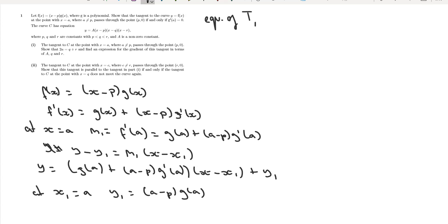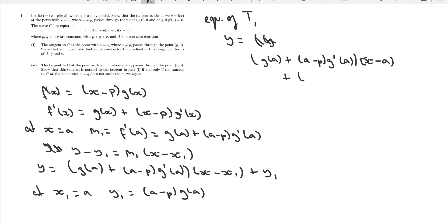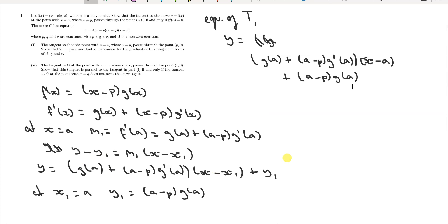The equation of tangent T1 is: y = [g(a) + (a − p)·g'(a)]·(x − a) + (a − p)·g(a). We've found x1 and y1 and substituted them in to give this equation. Now we suppose that T1 passes through the point (p, 0).